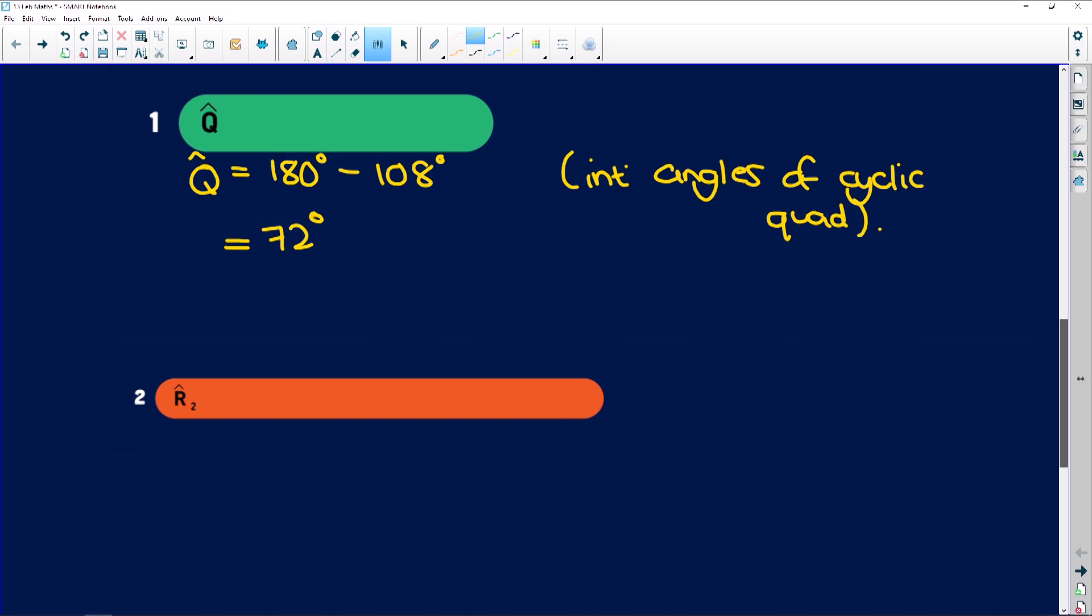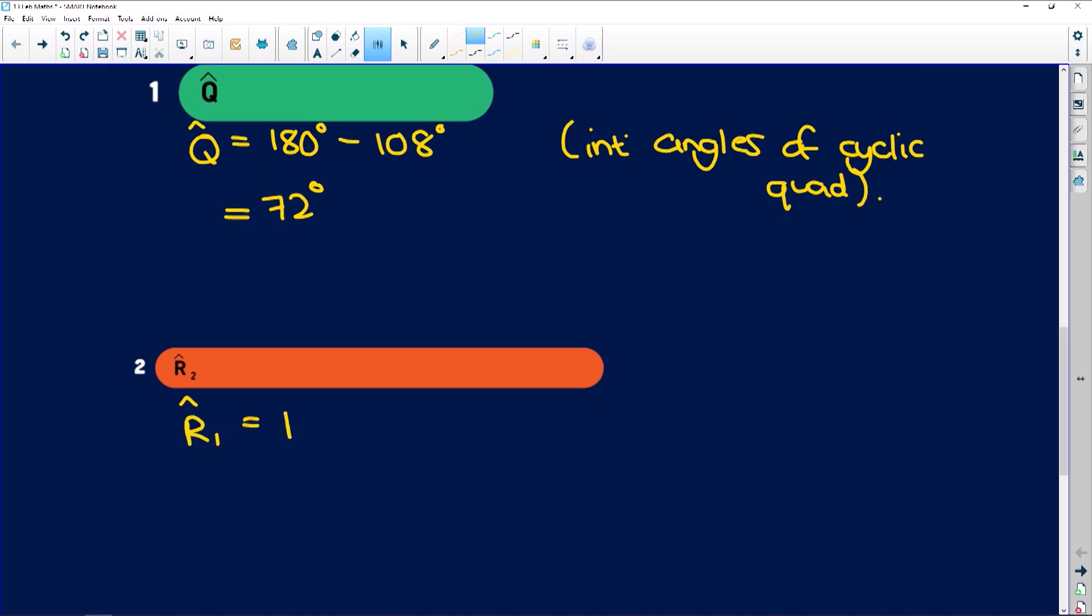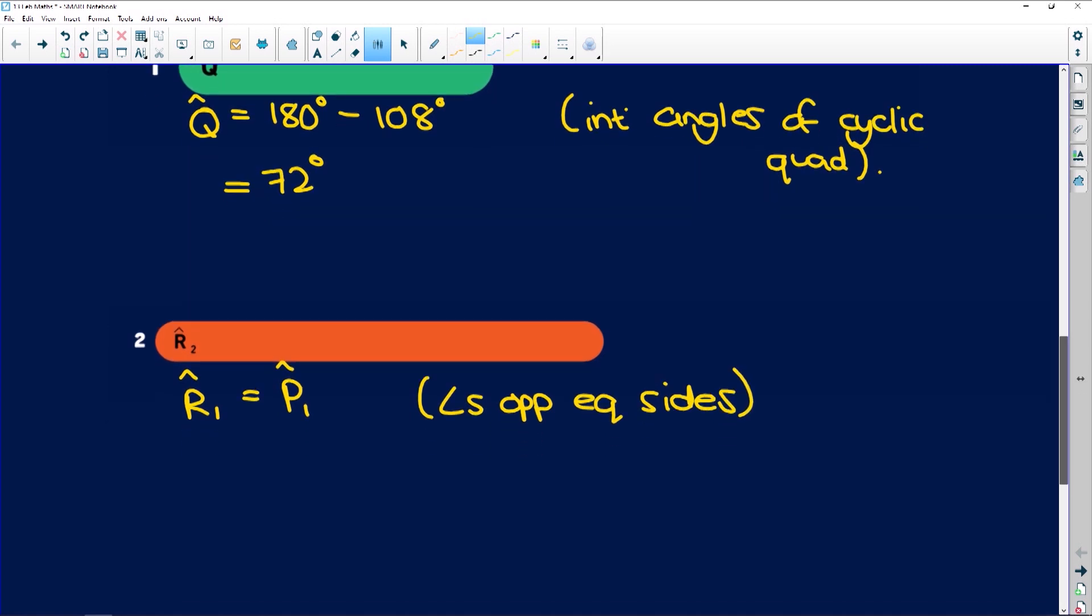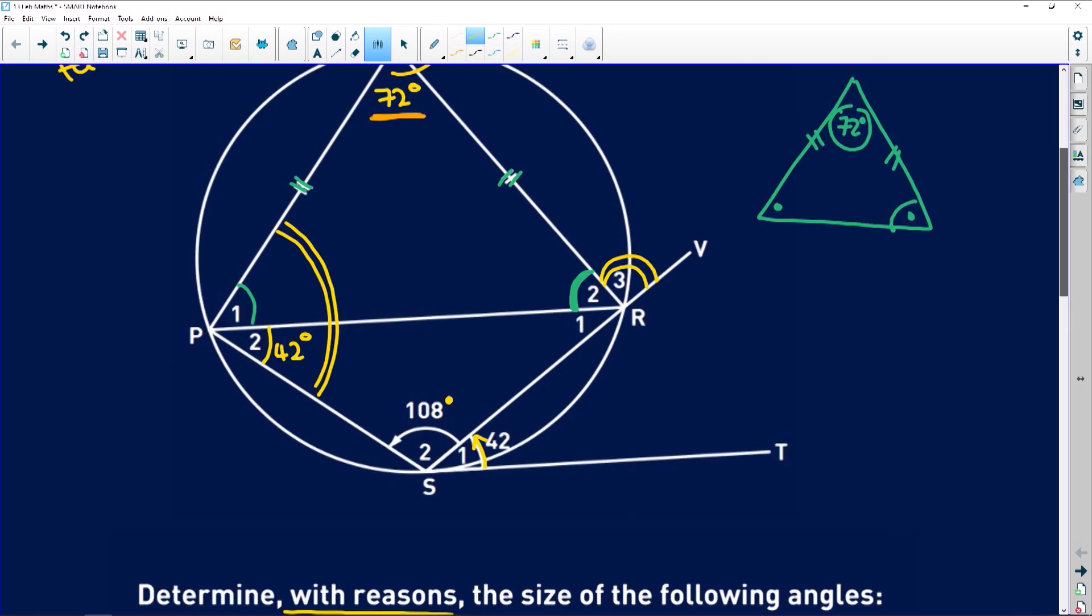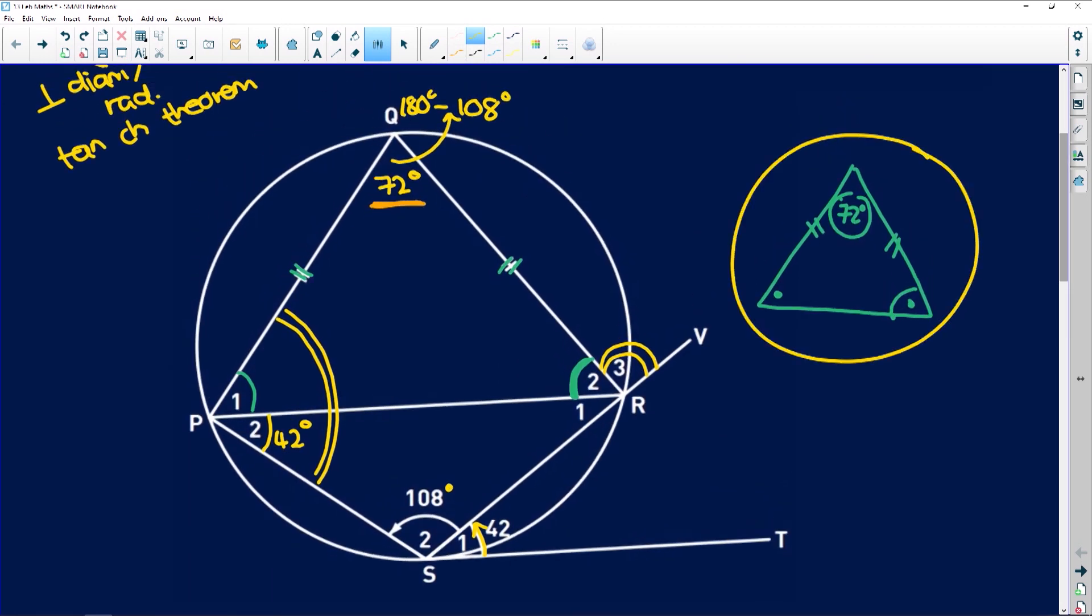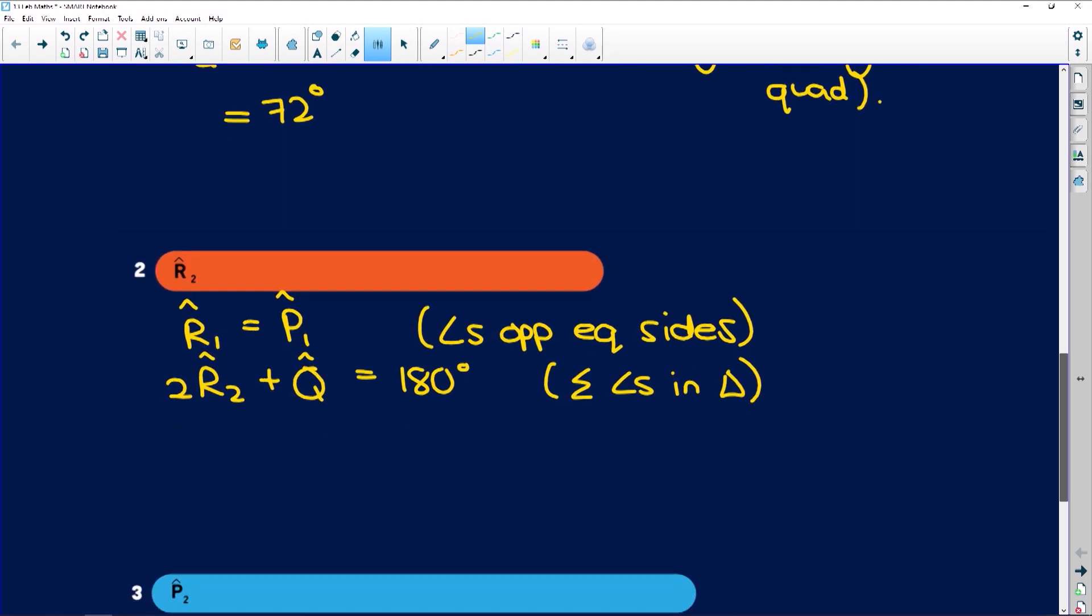R2 is equal to P1, first of all. Why? Because angles opposite equal sides. You could also say isosceles triangle. Both are fine. Okay. Then you can say, therefore, 2 times R2 plus Q is 180 degrees. Why? Because of sum of angles in a triangle. Okay. If we look over here, we've got interior angles of a triangle, all adding up to 180 degrees. And we've just found Q at 72 degrees.